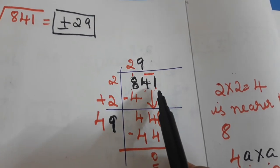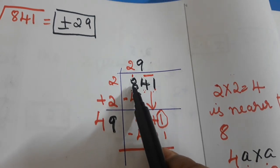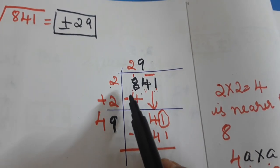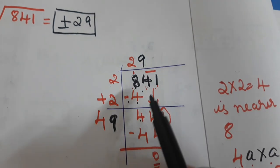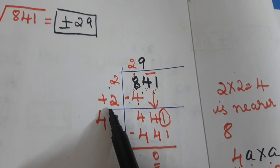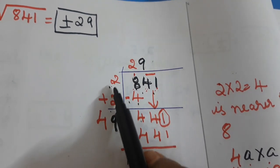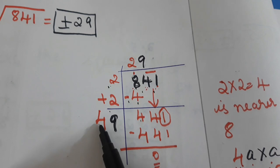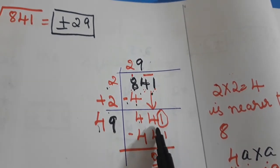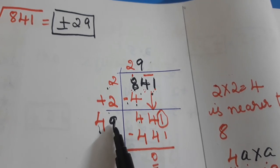Recap: 841 is given. Group from the right side — 41 is one group and 8 is one group. Nine is nearer to eight? No — two twos are four, nearer to 8. So eight minus four is four, bring 41 down to get 441. Same number repeated: two plus two gives four, then eight minus four is four.